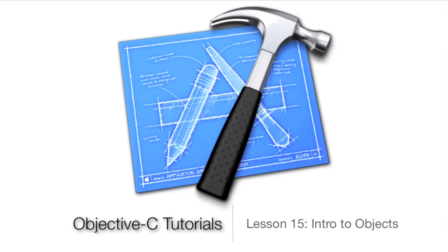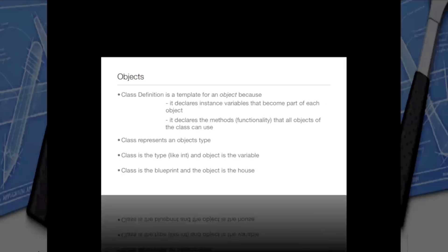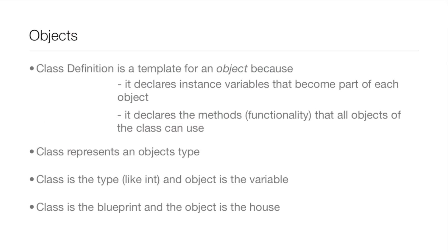What's up guys, Jordan here with Objective-C Tutorial's lesson 15, intro to objects. In the last lesson we were talking about classes, but this lesson we'll be mainly talking about objects. The class definition is a template for an object because it declares instance variables that become part of each object, and it also declares the methods — the functionality that all objects of the class can use.